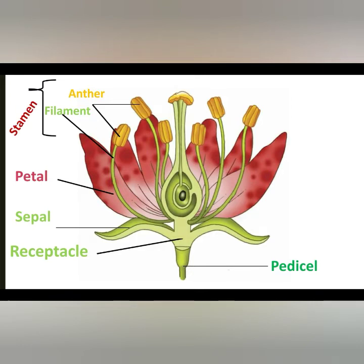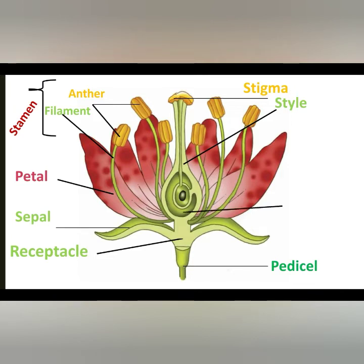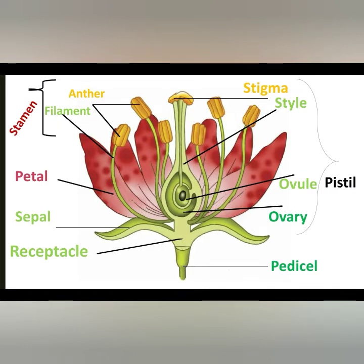Then we have the stigma, supported by the style, the ovary, which houses the ovule. The stigma, the style, the ovule, and the ovary all together form the female part, which is called the pistil or carpel. So these are the parts of the flower.